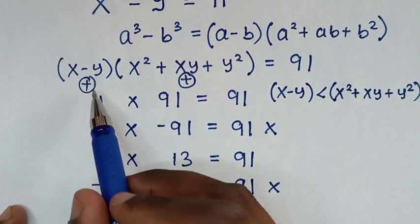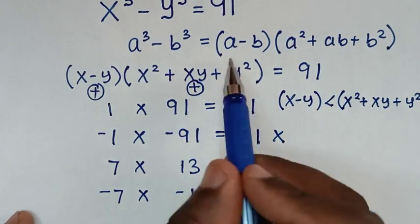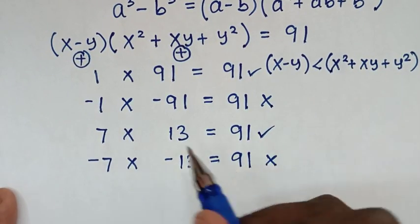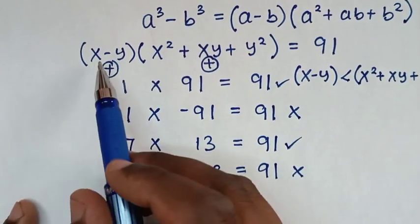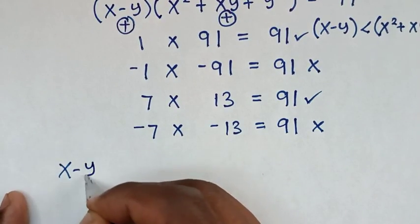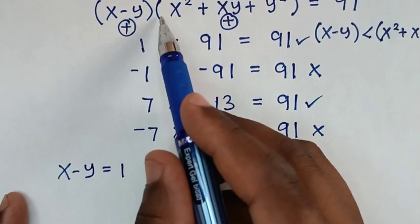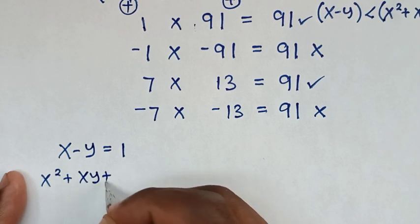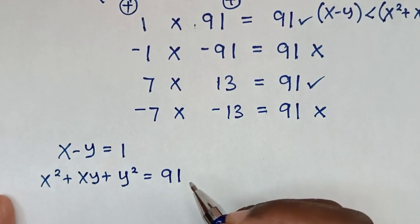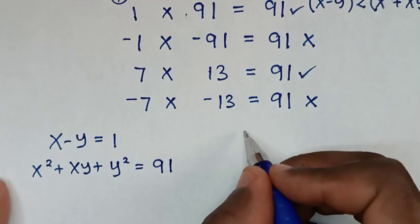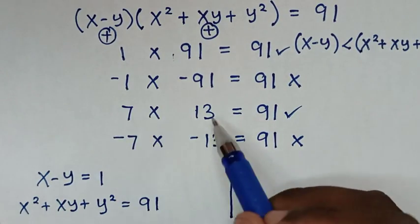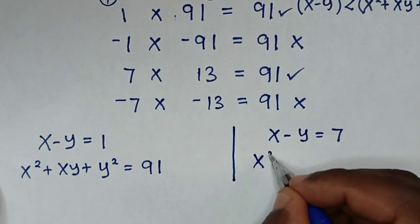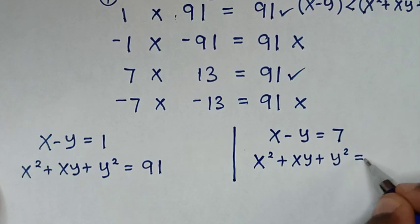So we continue to solve by checking these two conditions. The first case: x minus y is equal to 1, and x square plus xy plus y square is equal to 91. The second case: x minus y is equal to 7, and x square plus xy plus y square is equal to 13.